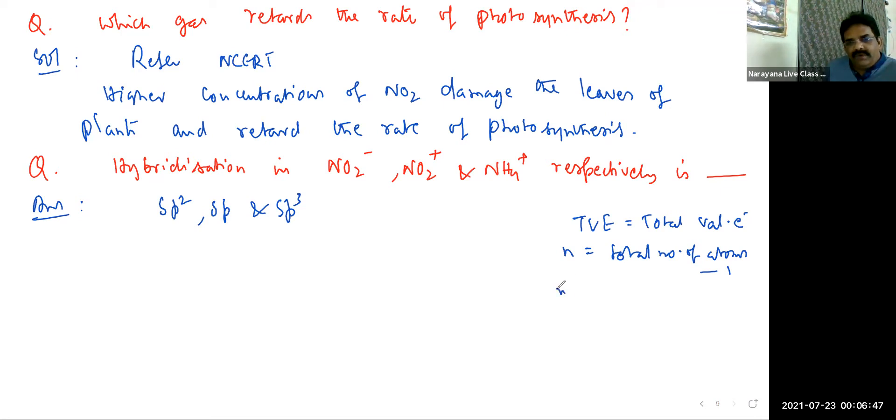I'll calculate number of lone pairs and number of bond pairs. Number of lone pairs is TVE minus 8N by 2. This is for all other elements. If hydrogen is present, then the formula is number of lone pairs equal to TVE minus 2N divided by 2.